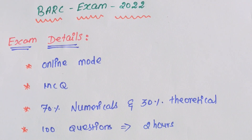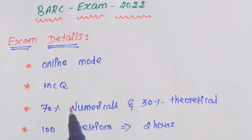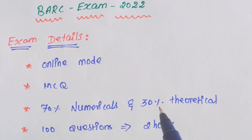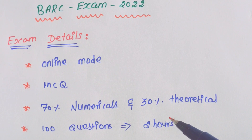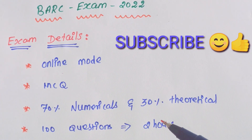First, the exam details: the exam is in online mode and questions are MCQ — multiple choice questions. About 30% of questions are theoretical. If you know how to prepare for CSIR and GATE, you can compare them to BARC exams. It is very simple with basic questions, but mistakes can happen, so work carefully and you can clear this exam.